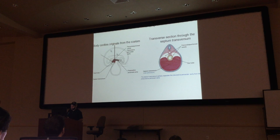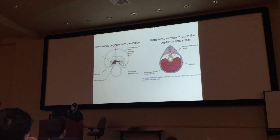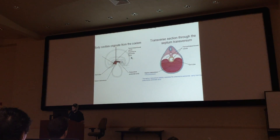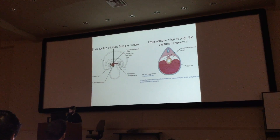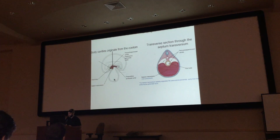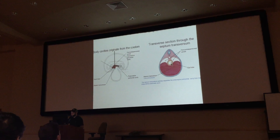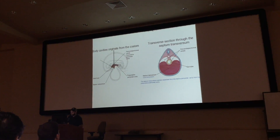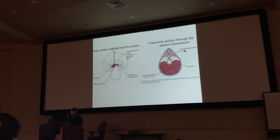This is a transverse section cut through that region. This shows you the yolk sac in transverse section. Here's your gut tube. The cut is placed in front of the yolk sac, which is why you don't see the midgut or the yolk sac in this cut. Here are your pericardioperitoneal canals, which are the ones that get closed off when you form the diaphragm.